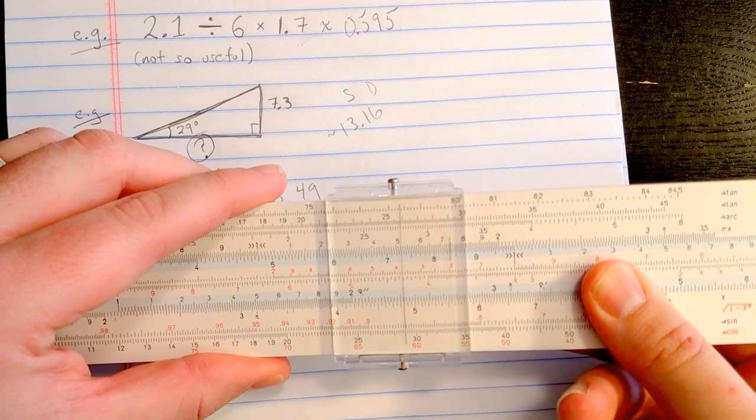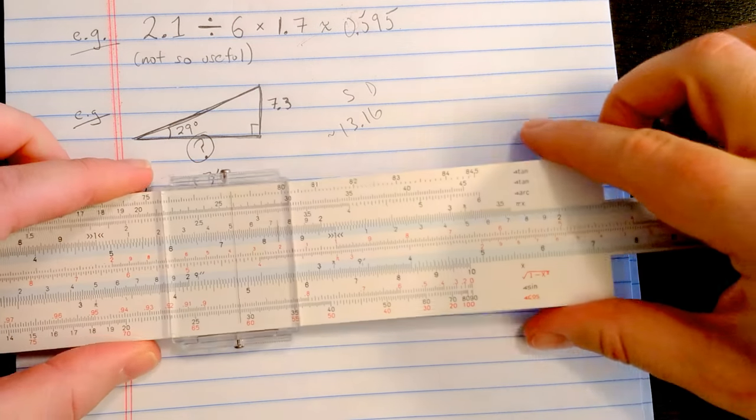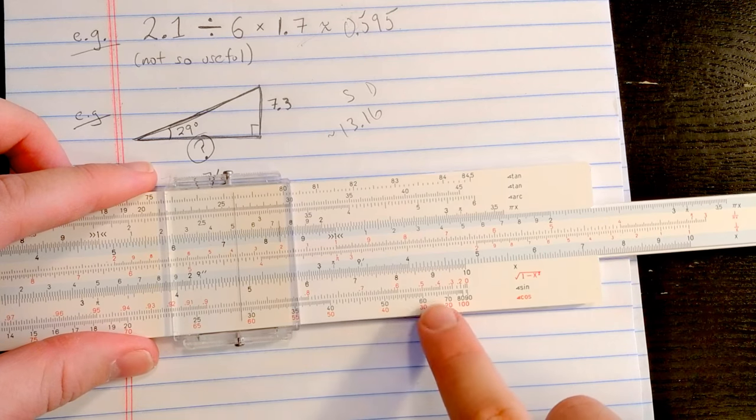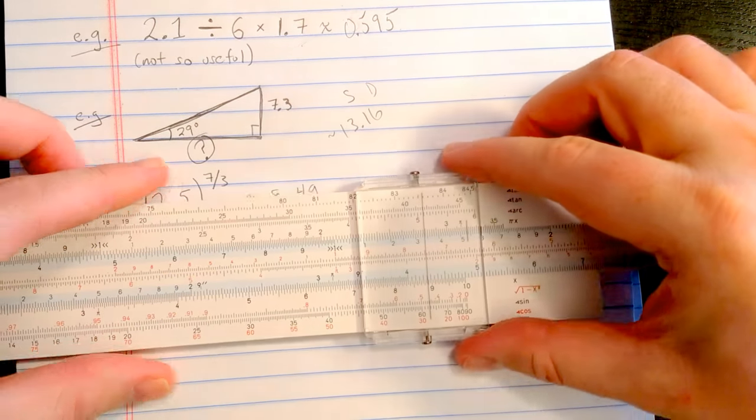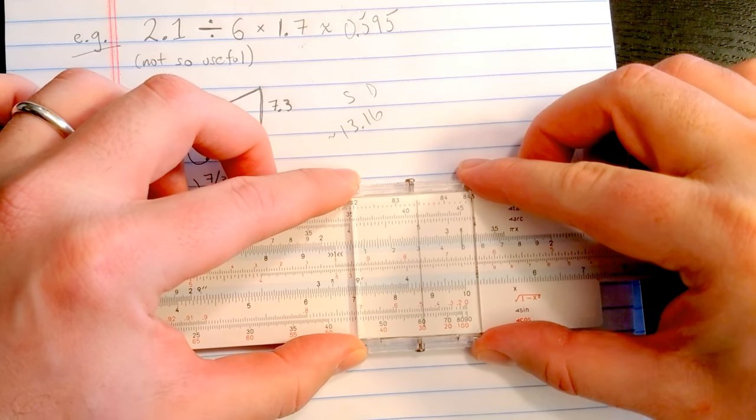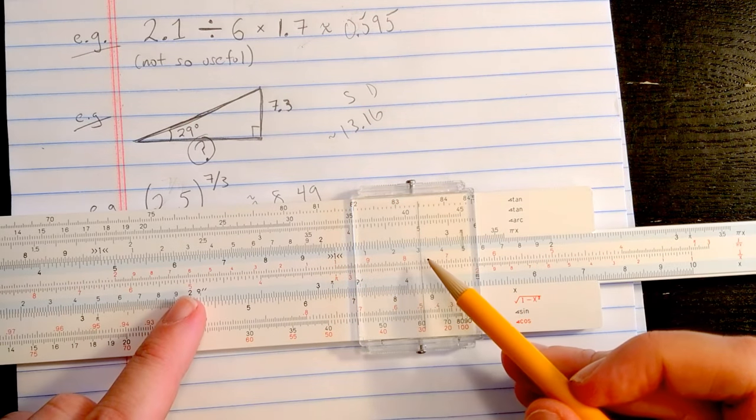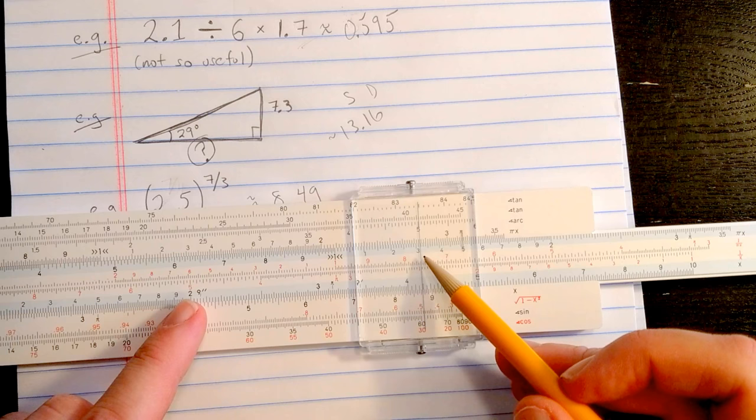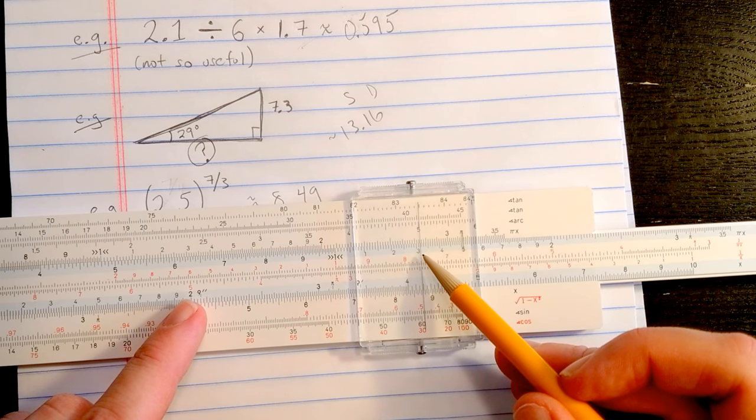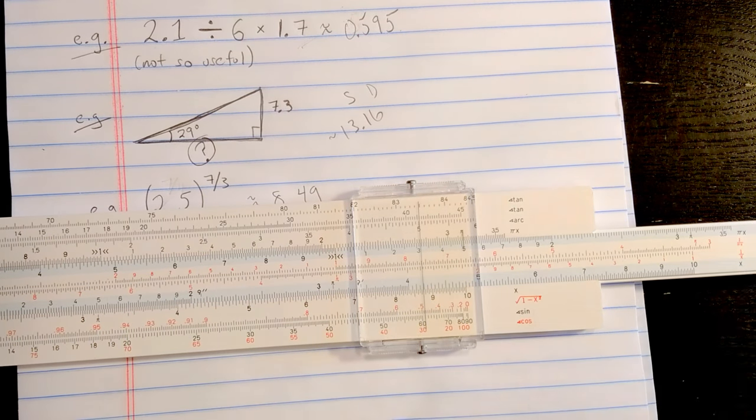Found the 7.3 under the hairline. Now let's move on the S scale over to the 61. Okay. Then on that CF scale here, I can read that same solution about 13.16 or so.